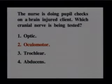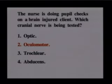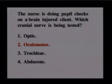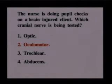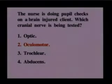Those answer choices are a little tricky because all four have something to do with vision. The optic nerve deals with seeing; ocular motor deals with pupils; trochlear and abducens also deal with eye movements.